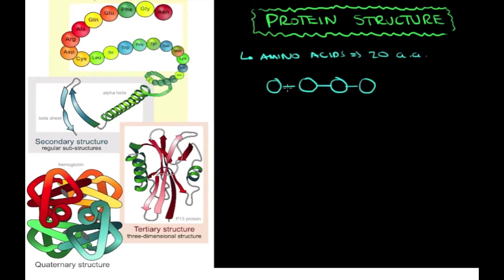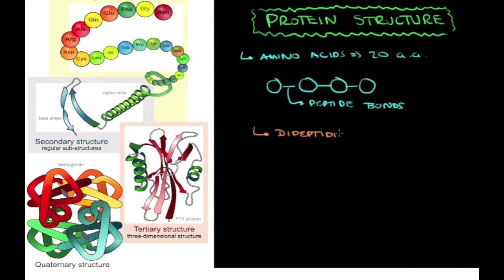These amino acids are bound to each other with peptide bonds. When you have two amino acids together, you call it a peptide — from two amino acids on, you call it a peptide. Going on nomenclature: if you have two amino acids, you call it a dipeptide. If you have three, you have a tripeptide.